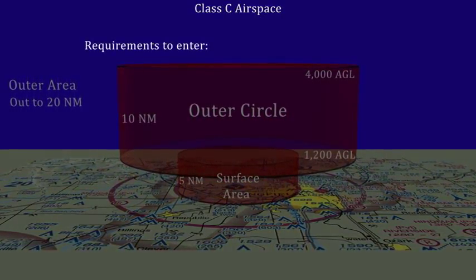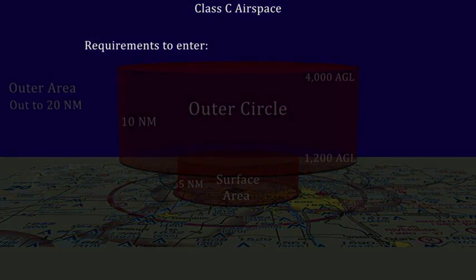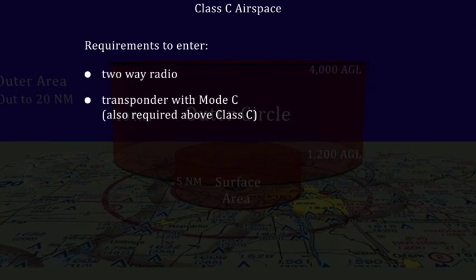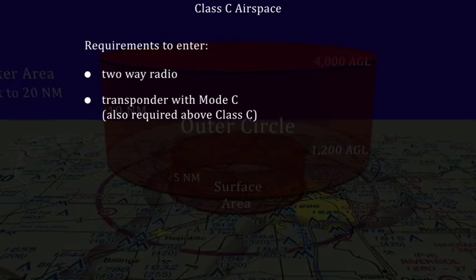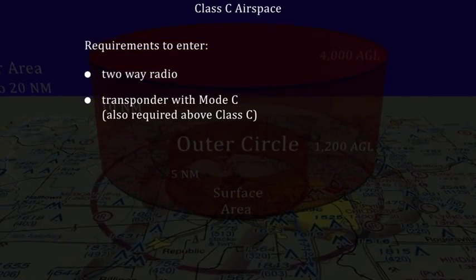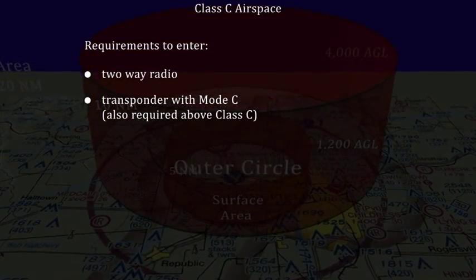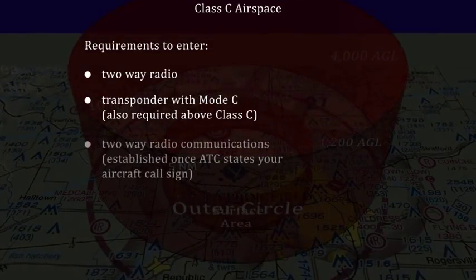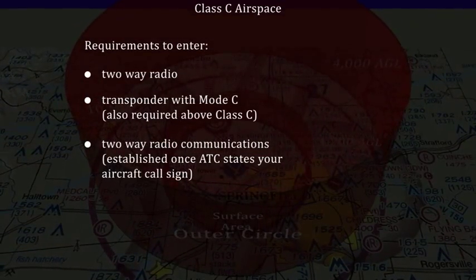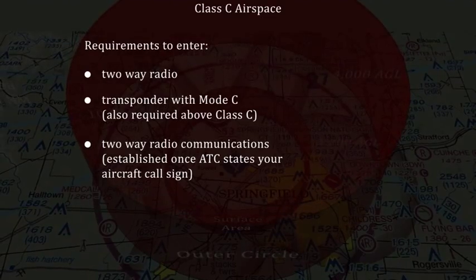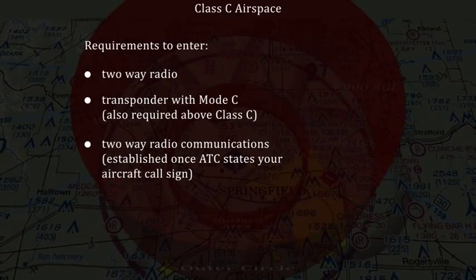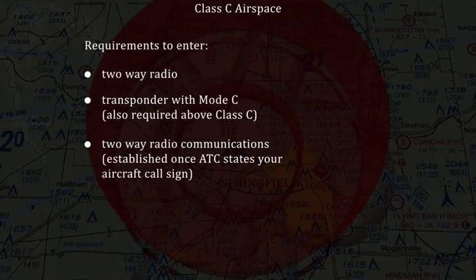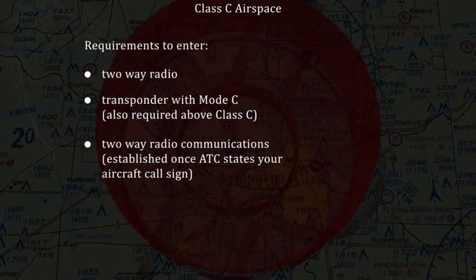In order to enter a Class C, your airplane must be equipped with a two-way radio and a transponder with Mode C. A transponder with Mode C is also required to operate above the Class C airspace. Two-way radio communications are required to enter a Class C airspace area. Two-way radio communications are established as soon as the air traffic controller responds to you by stating your aircraft call sign.